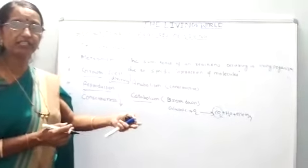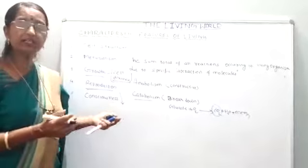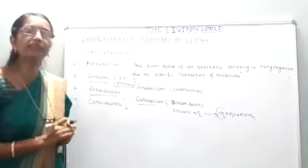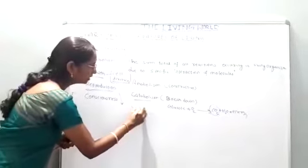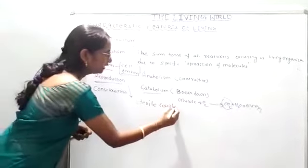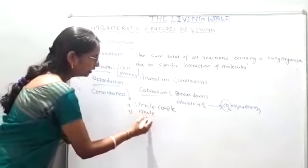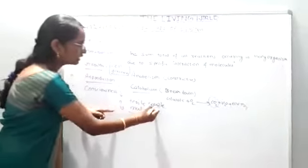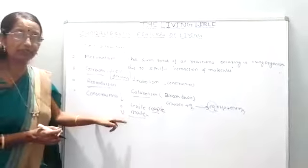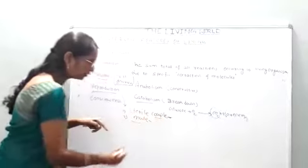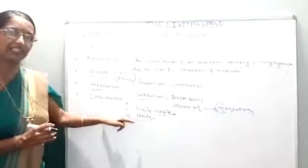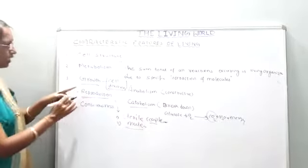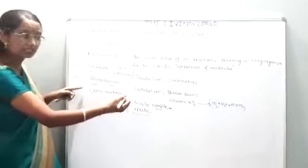Different organisms like hydra, algae, fungi, bryophyte, and humans show different types of reproduction. However, some organisms do not reproduce - for example, a sterile couple cannot reproduce, and a mule cannot reproduce - it is sterile. But this does not mean they are not living. They are living. This is the exception. Reproduction is giving birth to young ones.